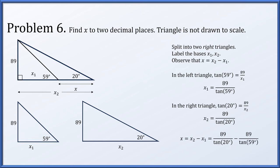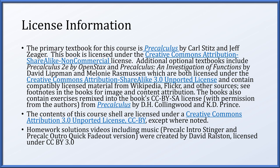Therefore, x2 minus x1, which is the missing side x, is 89 over the tangent of 20 degrees minus 89 over the tangent of 59 degrees, or approximately 191.05.